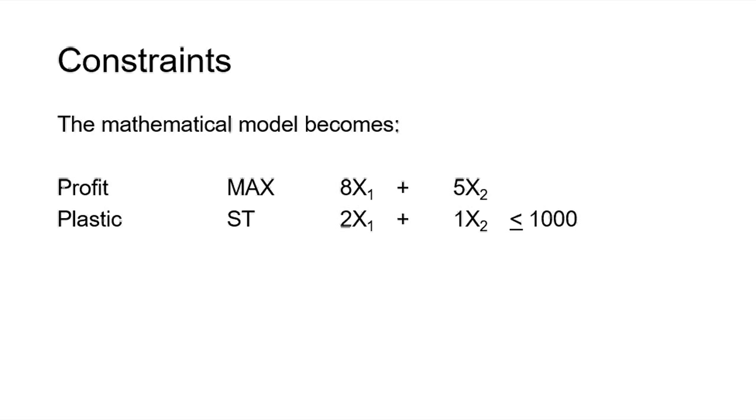Our profits cannot exceed the total number of Space Rays and Zappers and we only have 1,000 pounds of the plastic. So it takes 2 pounds per Space Ray and 1 pound for the Zapper per dozen. So it's 2 times x₁ plus 1 times x₂ has to be less than or equal to the 1,000 pounds. Together, the total plastic cannot exceed 1,000 pounds a week.